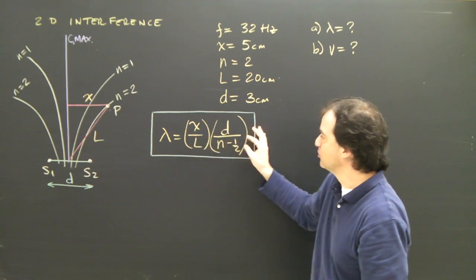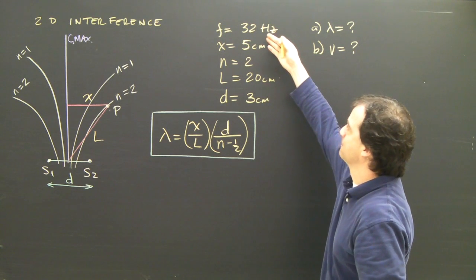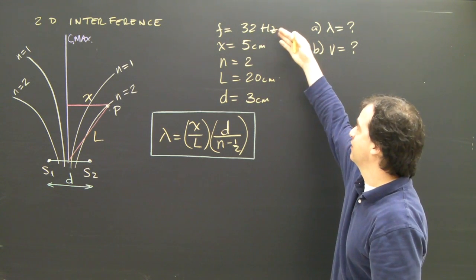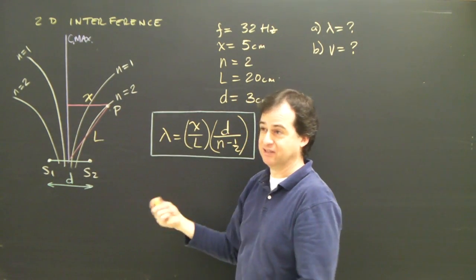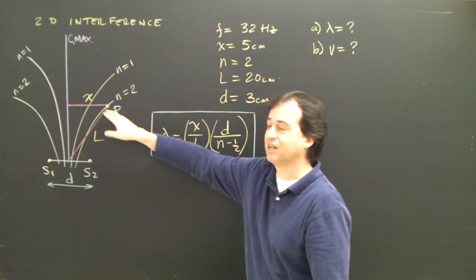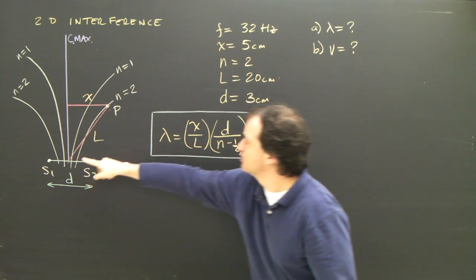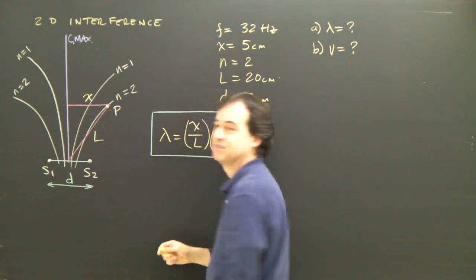And if I put all the numbers in there, I'll be able to figure out what the wavelength is. So I've got a simple problem here. A wave is 32 hertz. The distance I measure X in this experiment was 5 centimeters. I had the point on the second nodal line. I measured this length here, 20 centimeters, and the two sources were 3 centimeters apart.